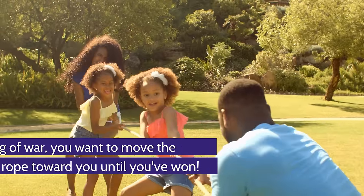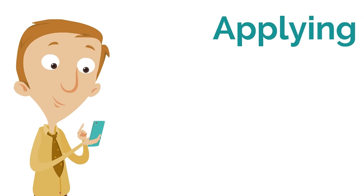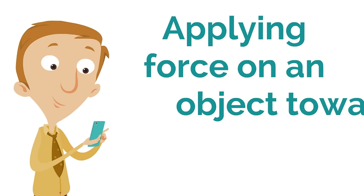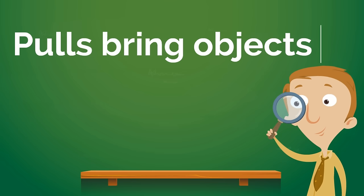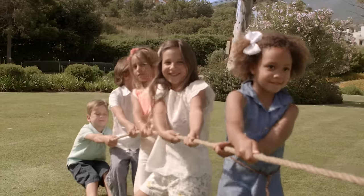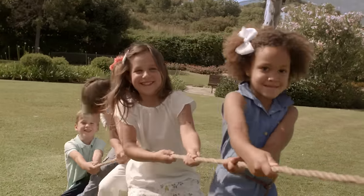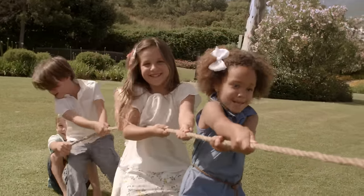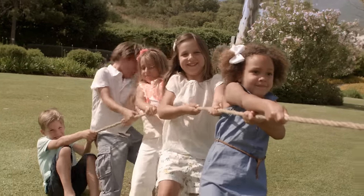In Tug of War, you want to move the rope toward you until you've won. It's all about moving the rope. Applying force on an object toward you is a pull. Pulls bring objects toward you. Here, the children are pulling on the rope — they are moving the object toward them.